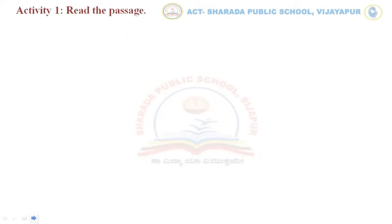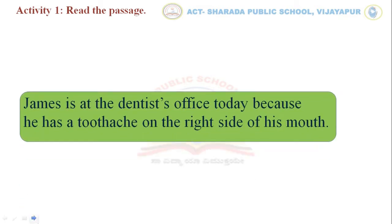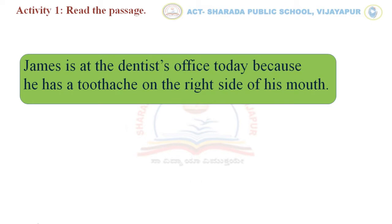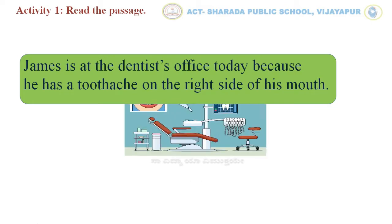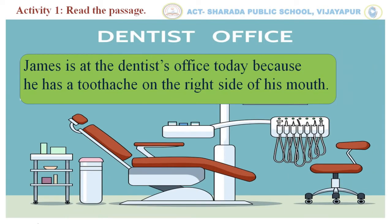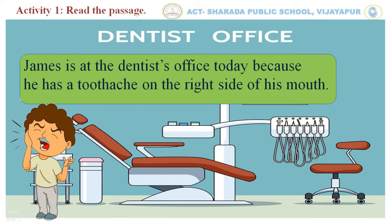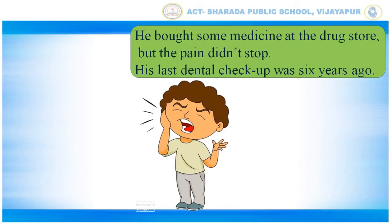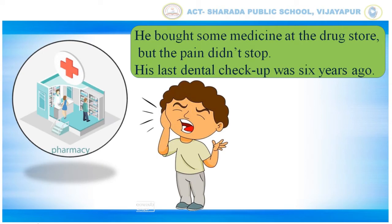Activity 1. Read the passage. Children, let me read the passage. James is at the dentist's office today because he has a toothache on the right side of his mouth. He bought some medicine at the drugstore but the pain didn't stop. His last dental checkup was six years ago.